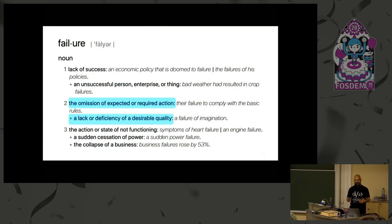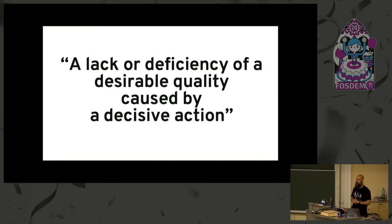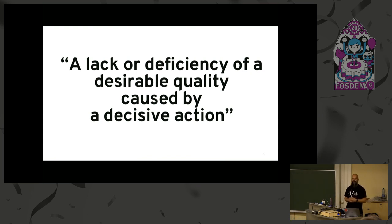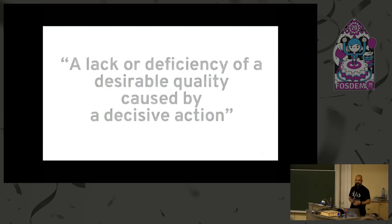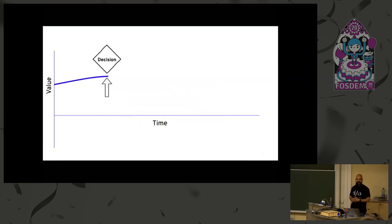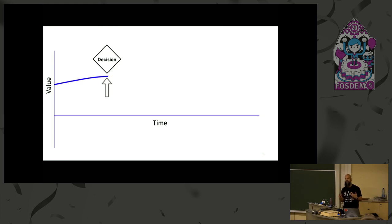Allow me to use those two definitions from the Oxford Dictionary and add one more phrase — 'of a decisive action' — and offer this working definition for the purpose of this conversation: 'a lack or deficiency of a desirable quality caused by a decisive action.' Let's use that. You don't have to agree 100%, but let's use this for the remainder of the hour. So let's say there is some measurable quality trending mostly in a positive direction over time — something you find valuable — and you have to make a decision.